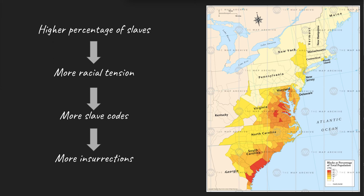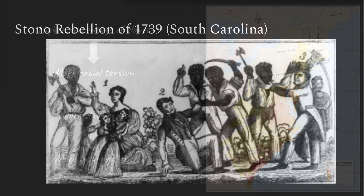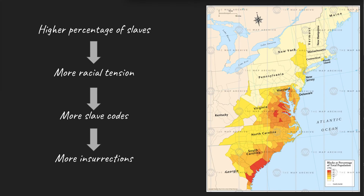One of the most significant rebellions took place in 1739 in Stono County, South Carolina, about 20 miles from Charleston. 20 blacks met near the Stono River and took guns and powder from a store, killing the two shopkeepers. They headed south towards St. Augustine, gathering more followers, burning houses, and killing whites. By the time slave owners caught up to them, the band of rebels numbered 60 to 100, and the deaths included 20 whites and 40 blacks. This was the largest slave uprising in the 13 colonies prior to the American Revolution, but it illustrates an even larger point.